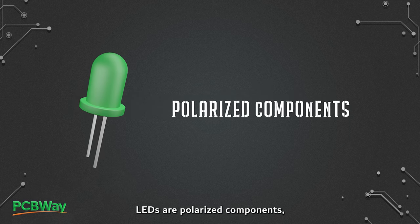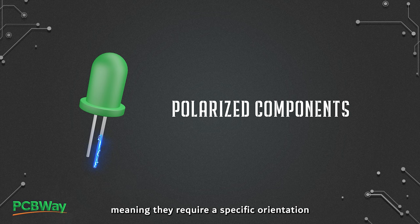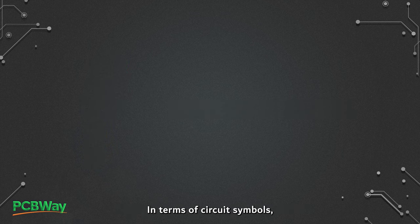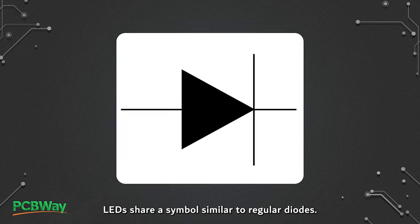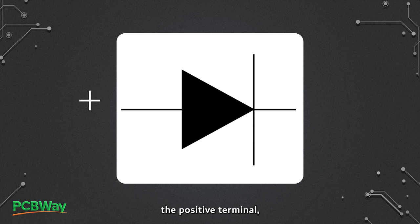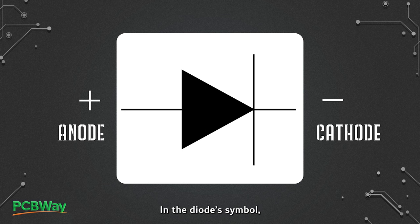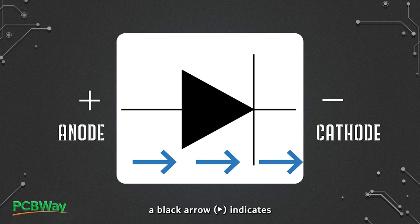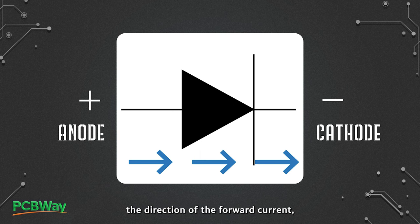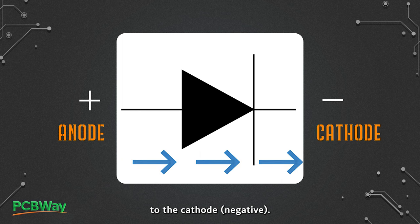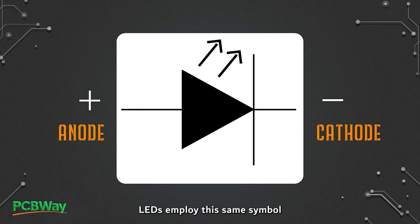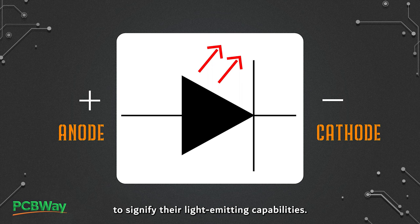LEDs are polarized components, meaning they require a specific orientation when connected to a circuit. In terms of circuit symbols, LEDs share a symbol similar to regular diodes. Diodes have two terminals: the positive terminal called the anode, and the negative terminal known as the cathode. In the diode symbol, a black arrow indicates the direction of the forward current, which flows from the anode to the cathode.